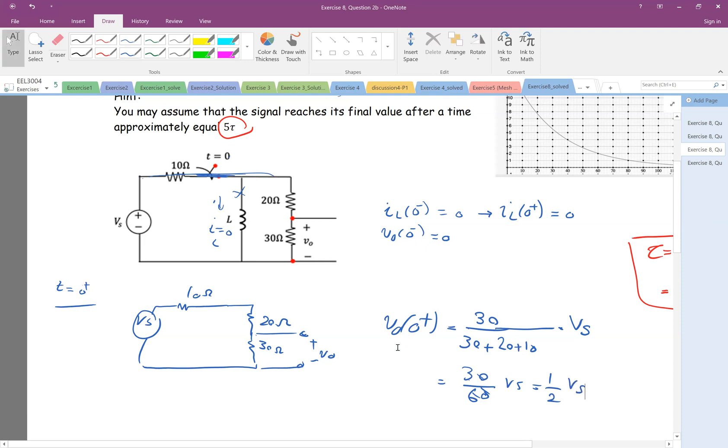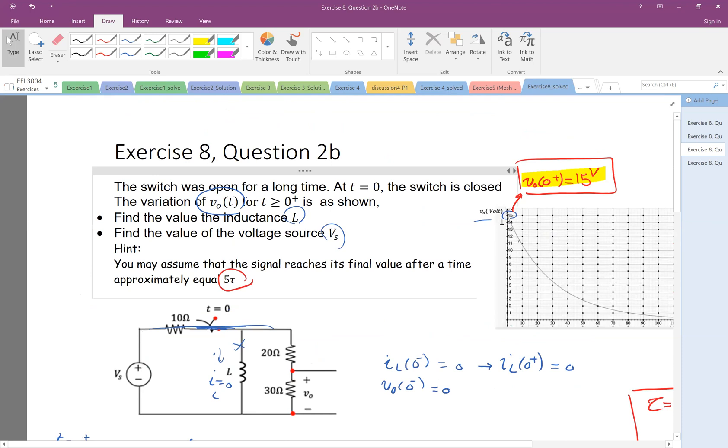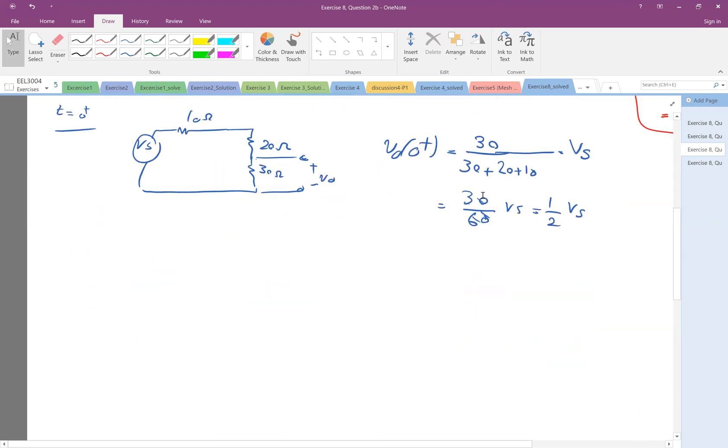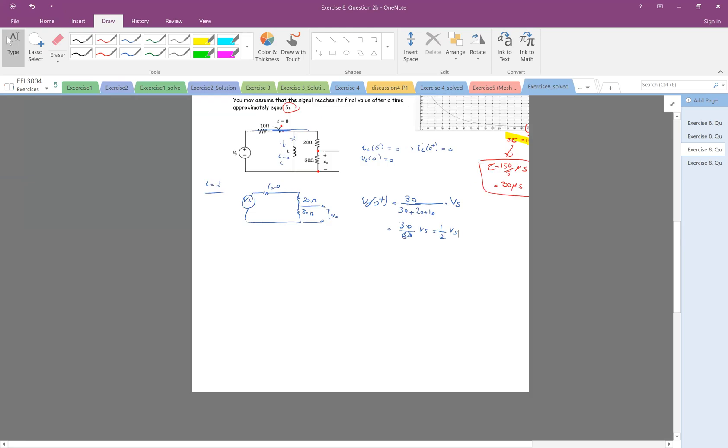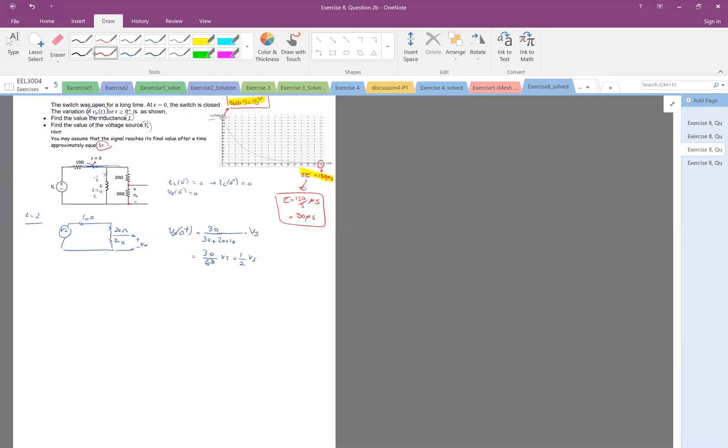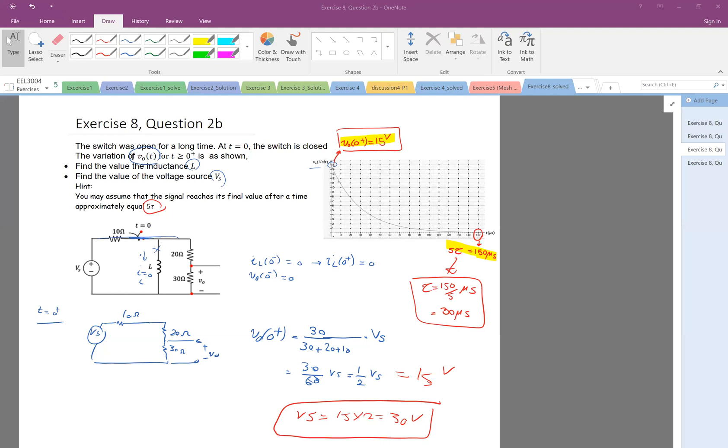And now, because we already know that V0 at zero plus from the graph is 15 volts, I can write here that this is equal to 15 volts. Therefore, Vs is 15 times 2, which is 30.